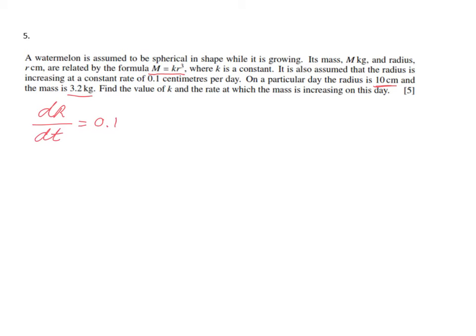First, the value of k, because that is slightly easier than the second part. The radius is 10, the mass is 3.2, so 3.2 equals k times the radius 10 to the power 3. I'm substituting those values in the equation they give me to find k.